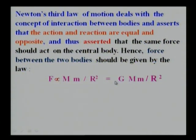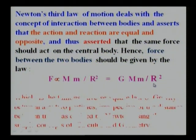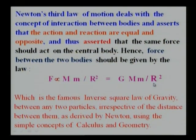Change the proportionality to a constant of proportionality, which is now F equals GMm by r squared. This is the famous Newtonian law of gravity.